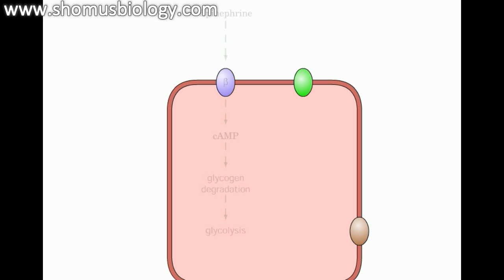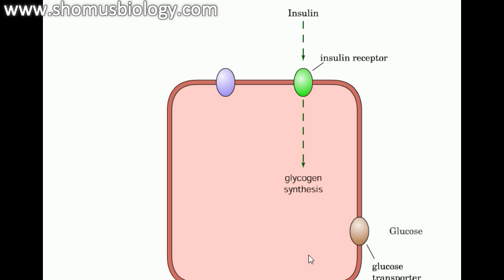When circulating glucose levels are high in the bloodstream, insulin is released from the beta cells of the pancreas. Insulin stimulates glycogen synthesis — it binds directly to insulin receptors on the outside of muscle cells, stimulating glucose uptake and driving glycogen synthesis inside the cell. Glucose monomers are then linked together and cross-linked to make glycogen, a complex polymer of glucose.